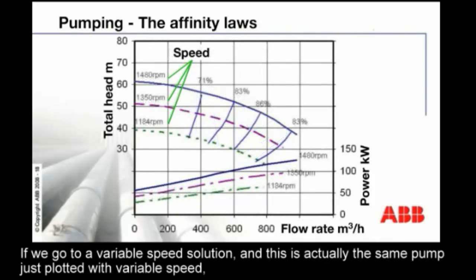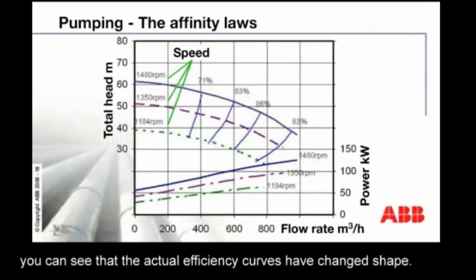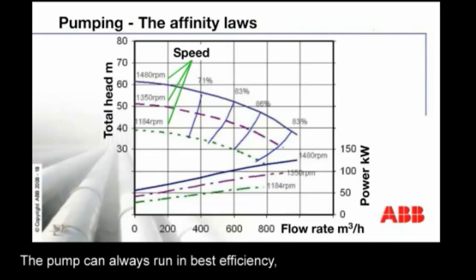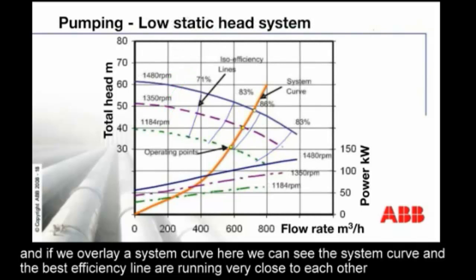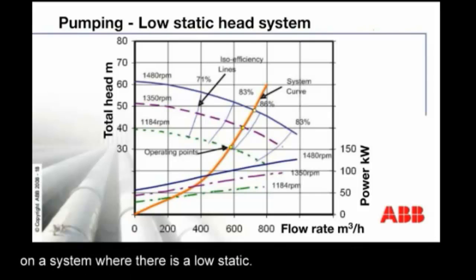If we go to a variable speed solution — and this is actually the same pump just plotted with variable speed — you can see that the actual efficiency curves have changed shape. The pump can always run at best efficiency. And if we overlay a system curve here, we can see the system curve and the best efficiency line are running very close to each other on a system where there is a low static head.